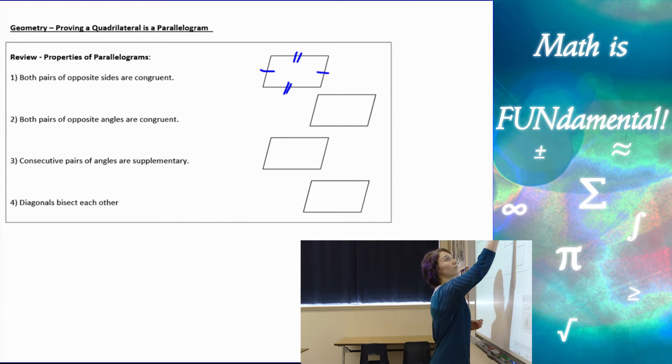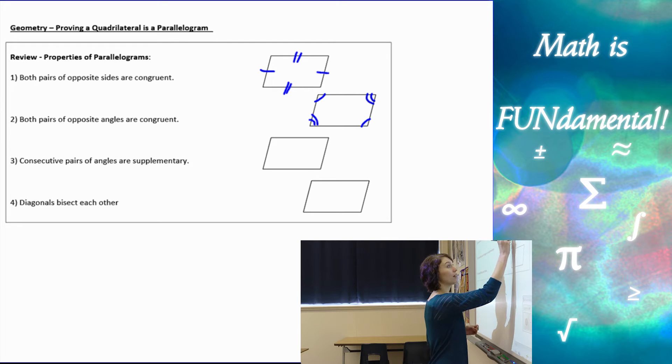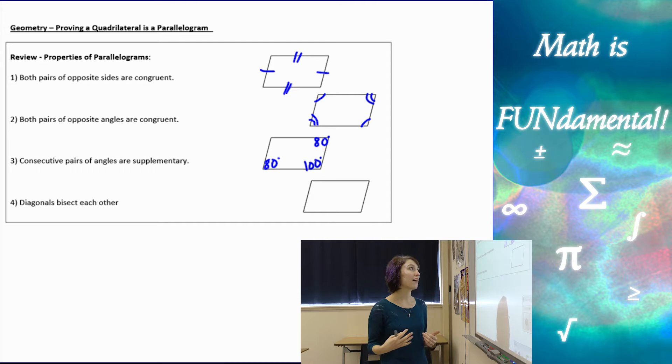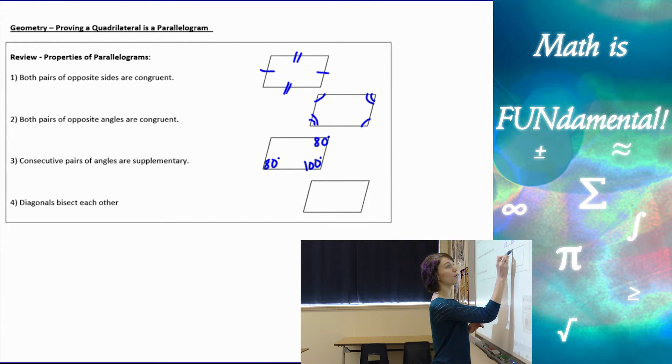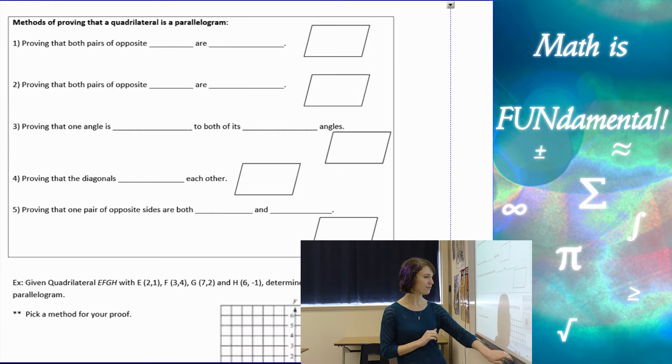The next property is that consecutive pairs of angles are supplementary. If I have an angle here, I'm going to say it's 100 degrees. Then consecutive angles on either side have to add up to 180 degrees, so they're supplementary. The fourth property is that diagonals bisect each other - diagonals cut each other in half. These properties are very important when proving that a quadrilateral is a parallelogram.